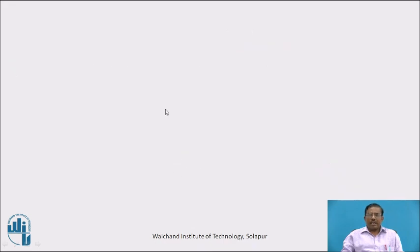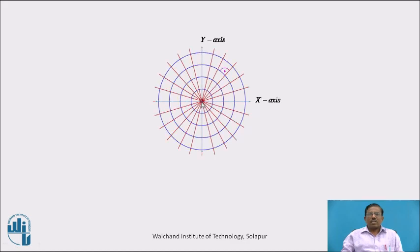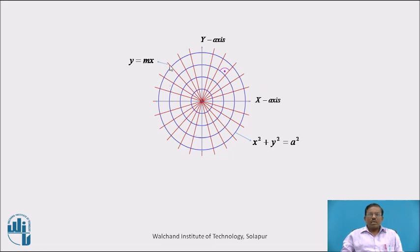Let us see the diagram. This is our x-axis and y-axis. These are the family of circles x² + y² = a², and the red color lines are the family of straight lines y = mx. When we observe this figure, we see that every member of the straight line cuts each member of the circle at right angles, so these two curves are orthogonal to each other.